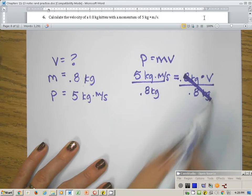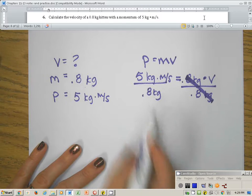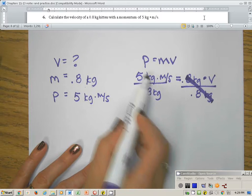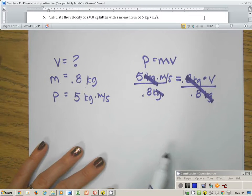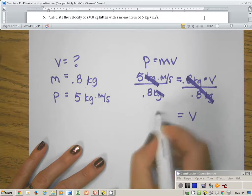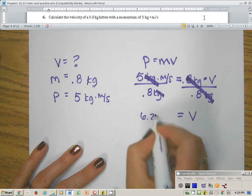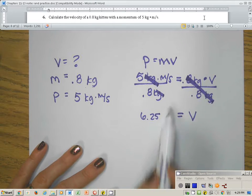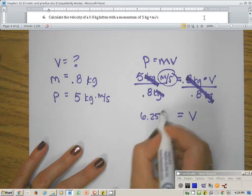That'll cancel them out on the right side. On the left side, it actually cancels out kilograms. And when I do 5 divided by 0.8, I will get 6.25. And if I'm not sure what my units are, look right here, they're left over meters per second.